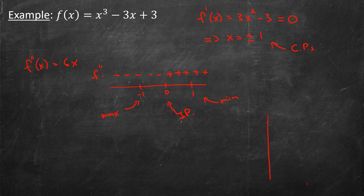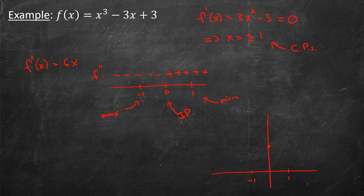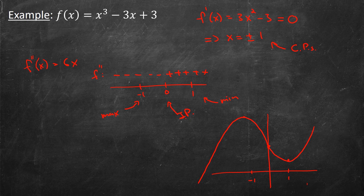Finally, we might want to draw a loose sketch. Plugging in x equal to 0 gives the value 3. Plugging in x equal to 1: 1 minus 3 plus 3 equals 1. Plugging in x equal to minus 1: minus 1 plus 3 plus 3 equals 5. So to the right of 0 it's concave up, coming down and curving upward. To the left of 0 it's concave down, going up to the maximum and then down. This is how I can get a loose plot of the cubic by analyzing when the second derivative is concave up versus concave down, identifying the minimum and the maximum.